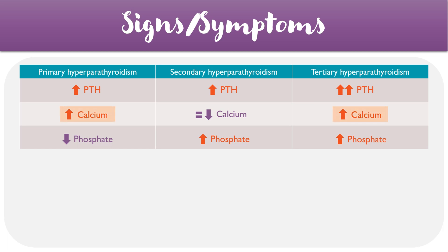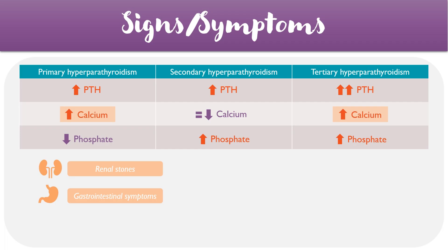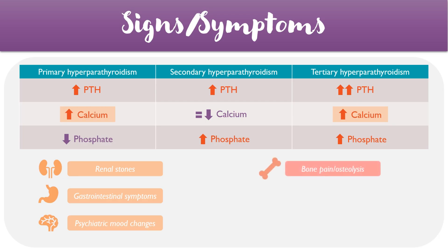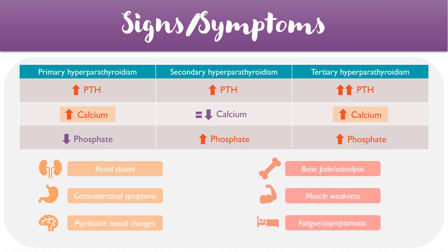Both primary and tertiary hyperparathyroidism lead to increased calcium levels in the blood, producing the classic symptoms of hypercalcemia, which include renal stones, gastrointestinal symptoms, and possible psychiatric mood changes. All three types of hyperparathyroidism also lead to additional symptoms including bone pain or osteolysis due to increased osteoclast activity, muscle weakness, and generalized fatigue. In some instances, patients may be asymptomatic.